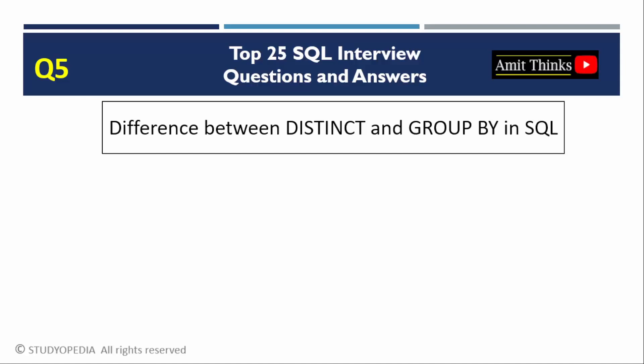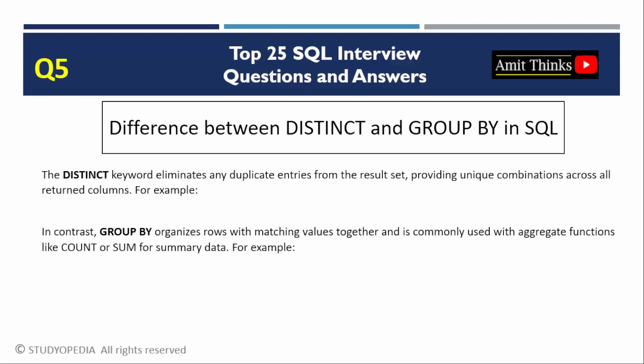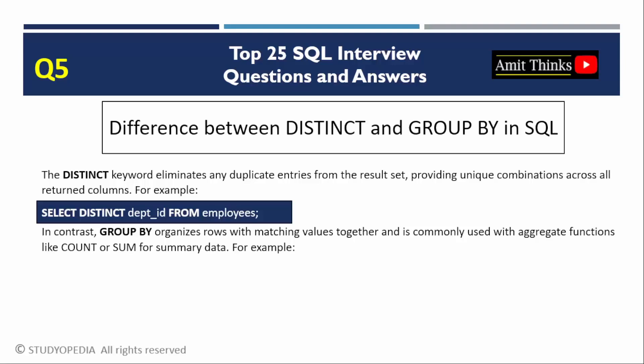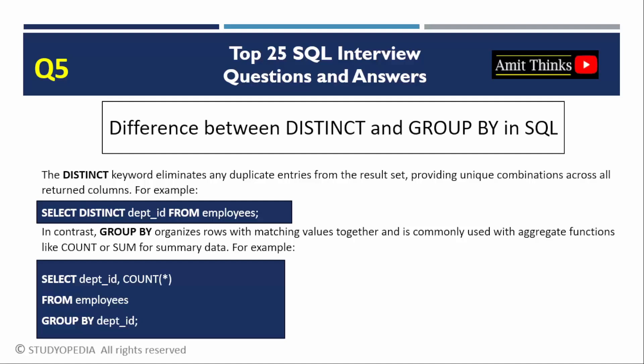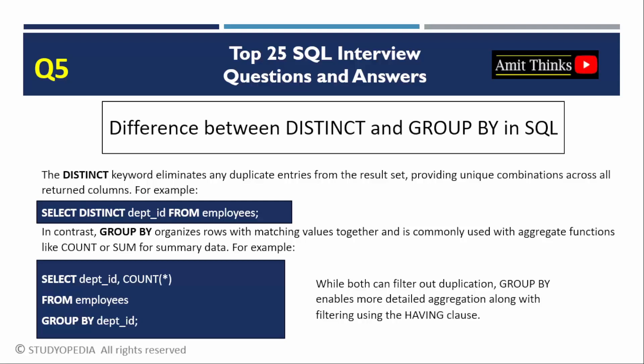Question 5: Difference between DISTINCT and GROUP BY in SQL. DISTINCT removes duplicates from a result set, operating on all selected columns and returning unique combinations. GROUP BY groups rows sharing common values and is typically used with aggregate functions such as SUM and COUNT, allowing summarizing of data per group. For example, DISTINCT removes duplicates from the department_id column in the employees table, while GROUP BY groups by department_id. Both can deduplicate, but GROUP BY enables advanced aggregation and filtering via HAVING clauses.